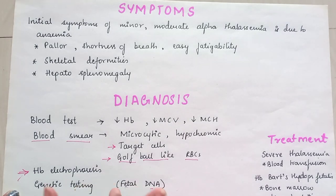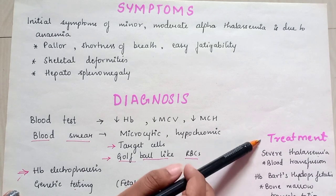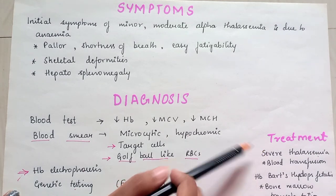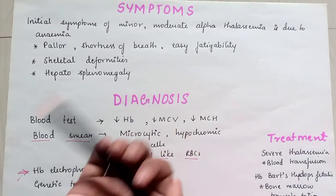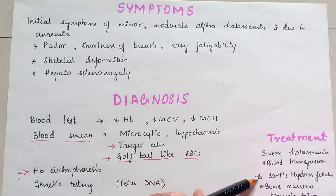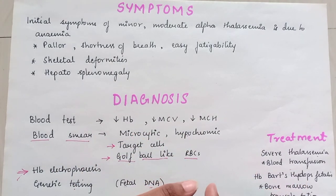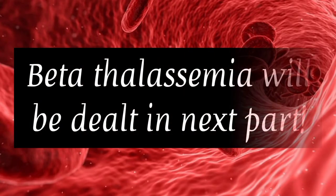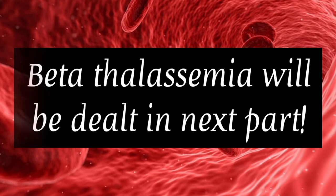Now we come to the treatment. For severe thalassemia, blood transfusion is recommended. For hemoglobin Bart's hydrops fetalis, bone marrow transplantation is recommended. Beta thalassemia will be dealt with in the next chapter of the hematology series.